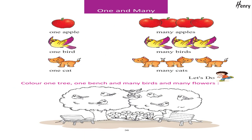One and Many: One apple, many apples. One bird, many birds. One cat, many cats. Let's do — color one tree, one bench, and many birds, and many flowers.